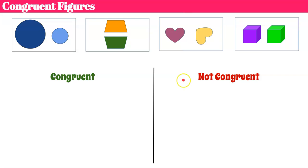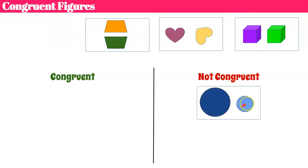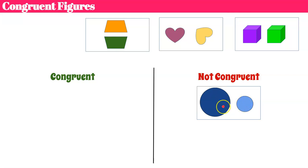Welcome back. The first set of figures I'm going to talk about are the circles. Those are definitely the same shape — they are both circles — but they are clearly not the same size. If I had the diameter or the radius of the circle labeled, we know that they would have different measures.